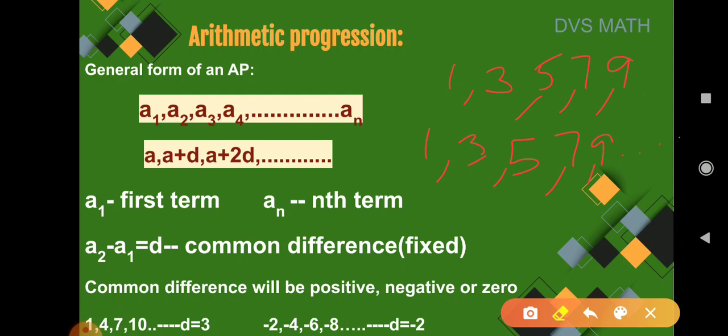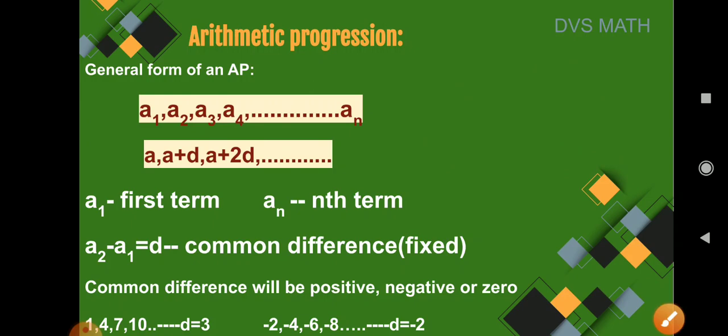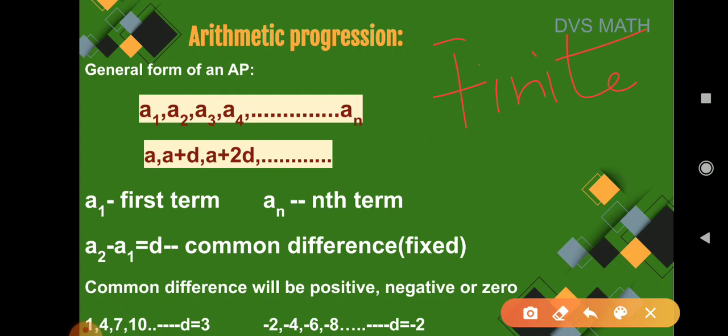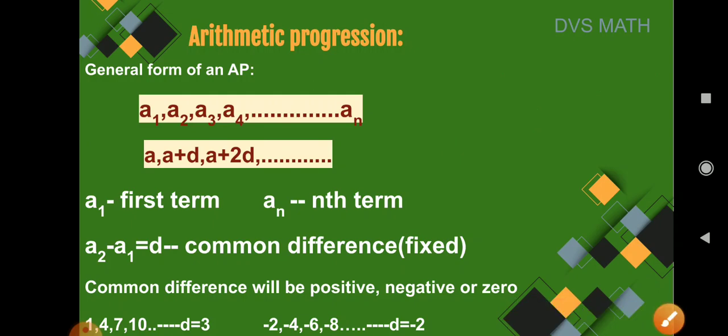If the sequence ends at a fixed number — like 9 here — we consider it a finite AP, meaning it contains a finite number of terms. On the other hand, if I write 3, 5, 7, and so on (with dotted lines), the terms are unlimited, meaning it continues infinitely. This type of AP is called an infinite AP.